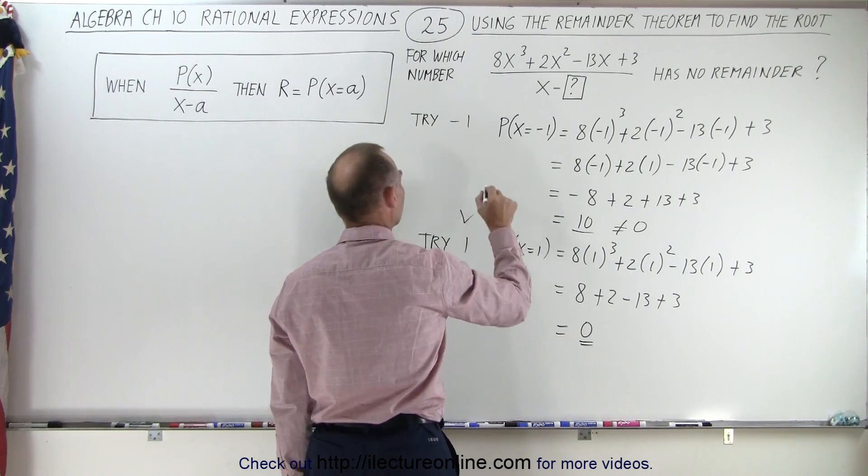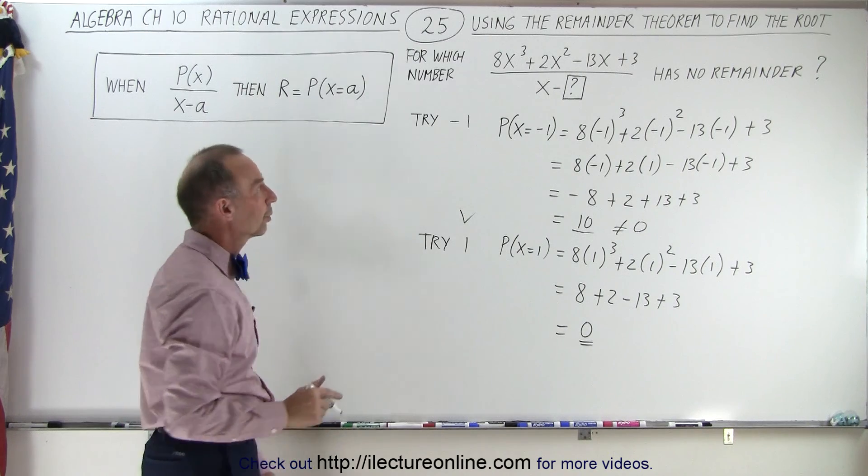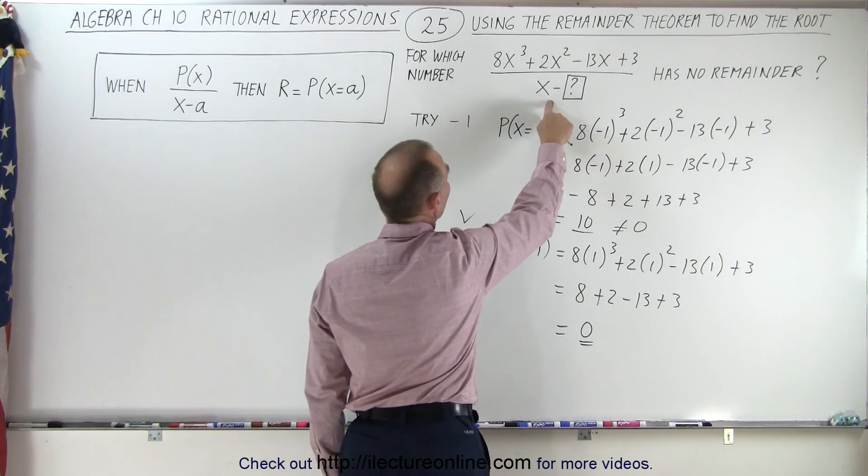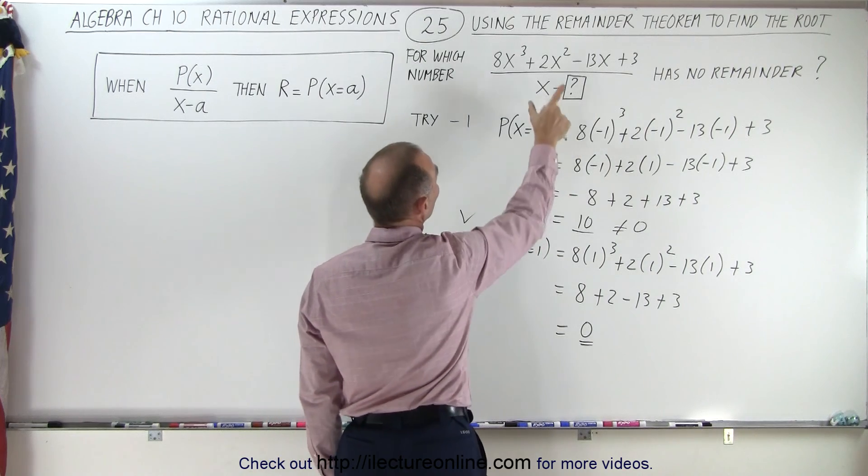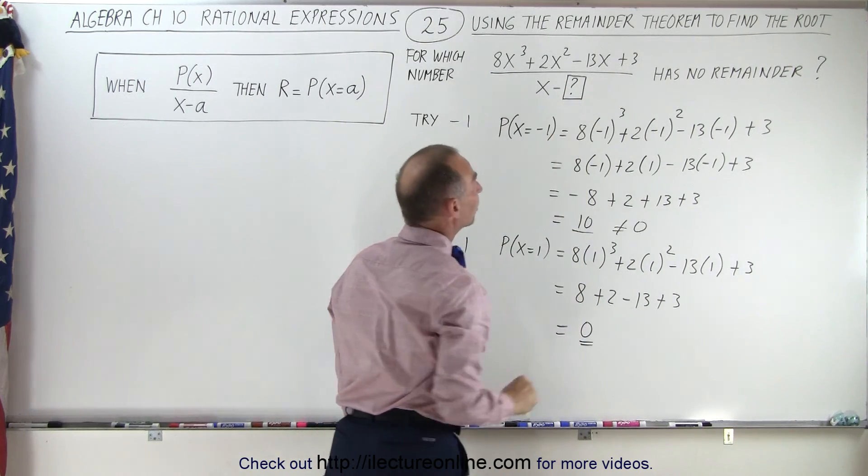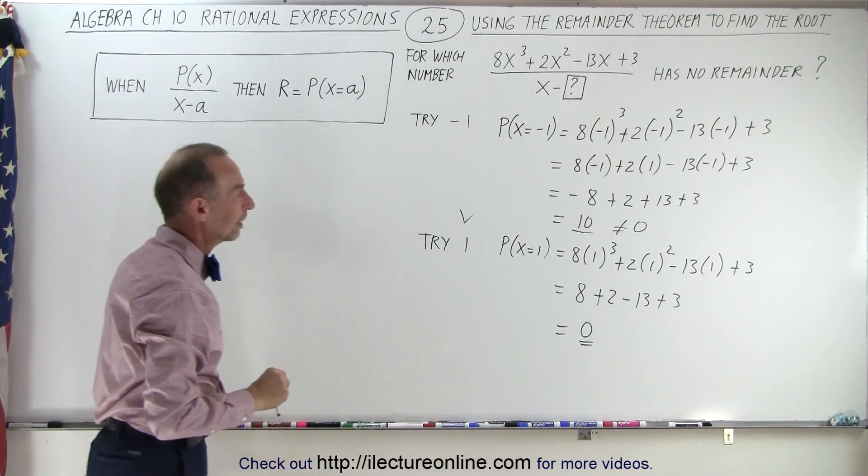So therefore, bingo, this is a root. In other words, if we plug in x minus 1 because it's minus the number, then we realize that there will be no remainder. It will fit into the numerator perfectly.